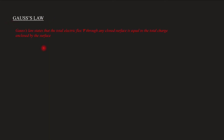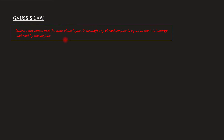Gauss's Law states that the total electric flux phi through any closed surface is equal to the total charge enclosed by the surface. So the total electric flux phi is equal to the charge enclosed, which I can represent as Q enclosed. This is the expression for Gauss's Law.